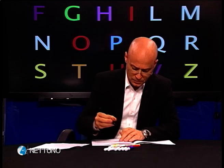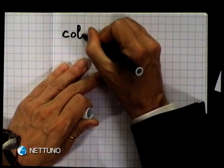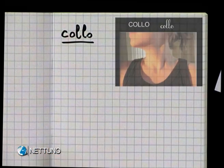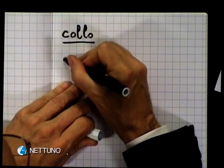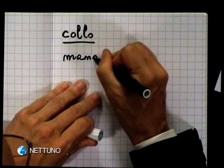Rivediamo ancora una volta alcuni dei nomi delle parti del corpo che abbiamo visto. Questa volta li scriviamo. Prima di scriverli io ve li indicherò sul mio corpo. Cos'è questo? Questo è un collo. Scriviamo la parola collo. Cos'è questa? Questa è una mano. Scriviamo la parola mano.